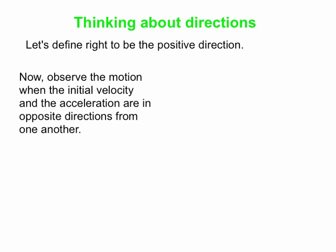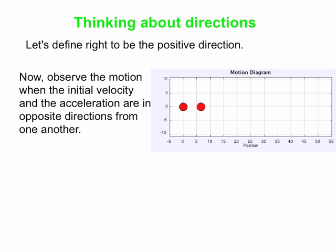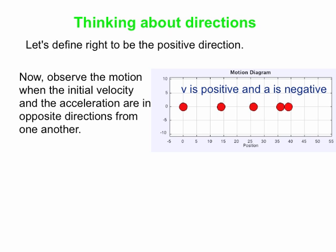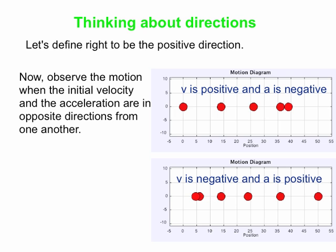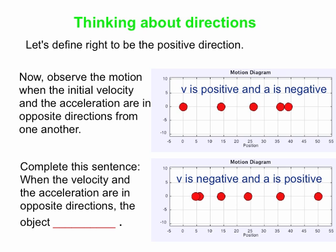Now let's look at the opposite situation — when the velocity is going one way and the acceleration is the other way. In one case, the velocity is directed to the right but the acceleration is to the left: velocity is positive and acceleration is negative. Here's another example where the velocity is directed to the left (negative) and the acceleration is directed to the right (positive). These motions are mirror images of one another. In both cases, the velocity and acceleration are in opposite directions to one another — and that's the key — so when they are in opposite directions, the object always slows down.